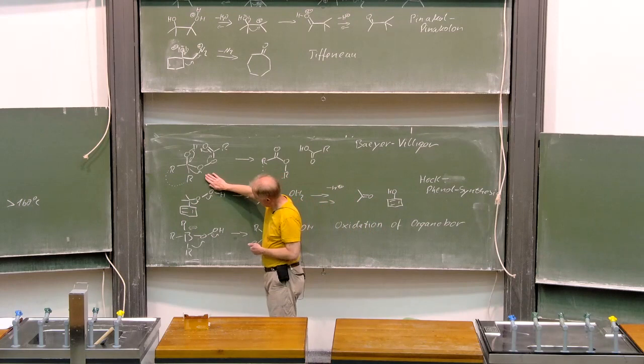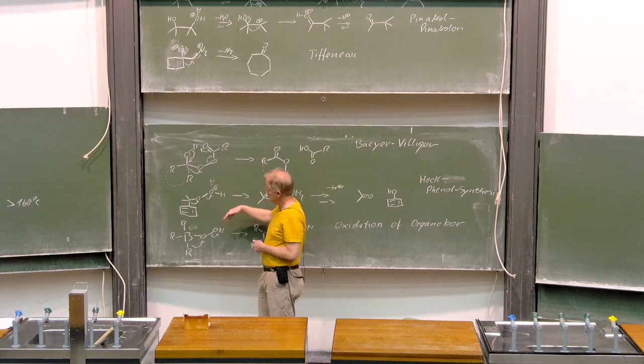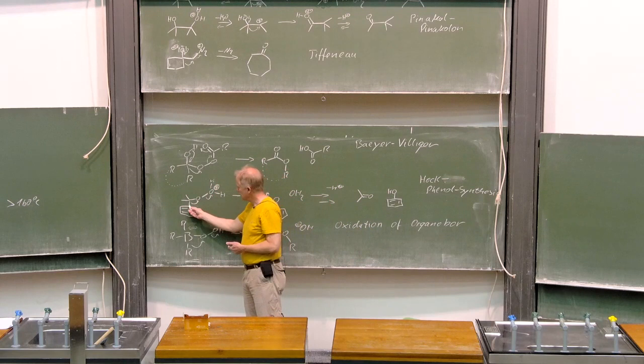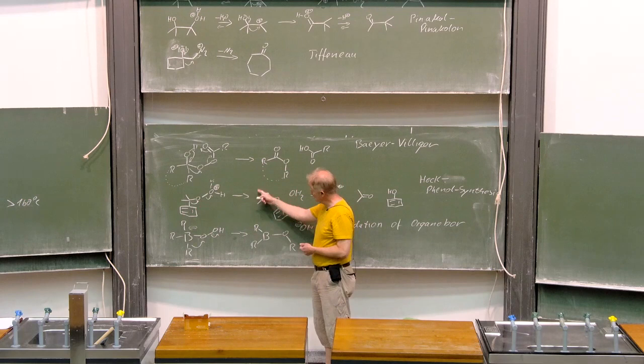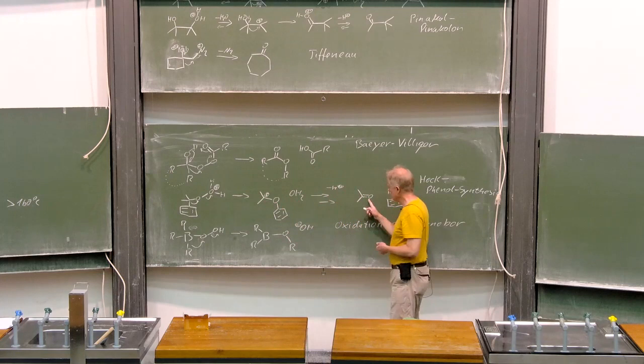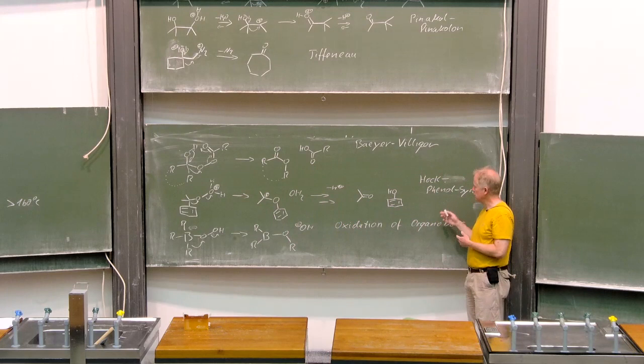Without this proton here, this molecule is called the cumene hydroperoxide. If you protonate it, then you have the water leaving group. Migration of the phenyl group will lead to this stabilized carbocation and water. A subsequent hydrolysis will lead to acetone and phenol. This is indeed an industrial process, and it's called the Hock phenol synthesis.